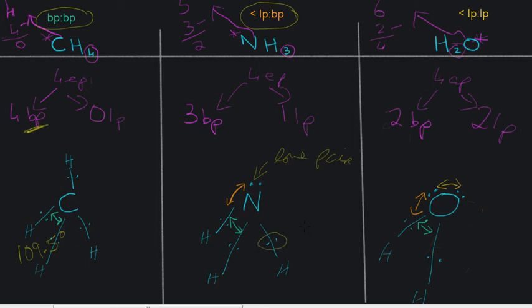And this bond pair is attracted not only to the nitrogen nucleus, but also to the hydrogen nucleus. So that means it's farther away from the nitrogen nucleus than the lone pair, which is only attracted to its own nucleus. So because bond pairs are farther away, it means from the nitrogen nucleus, it also means they're farther apart. So that means that they have less repulsion.